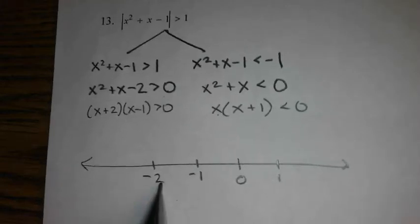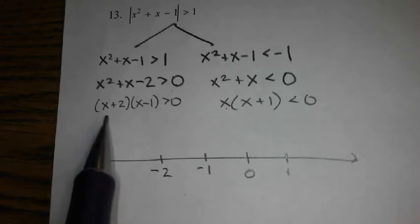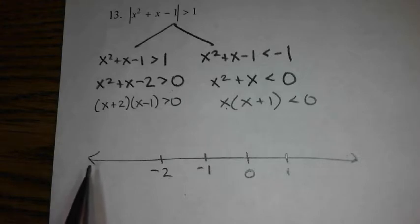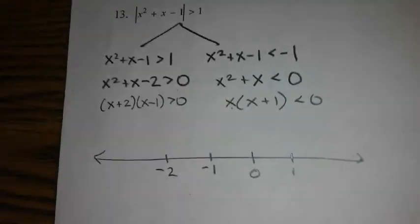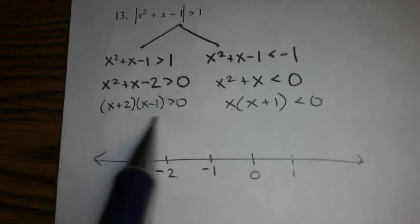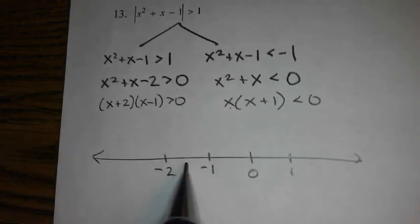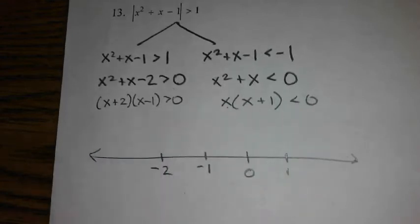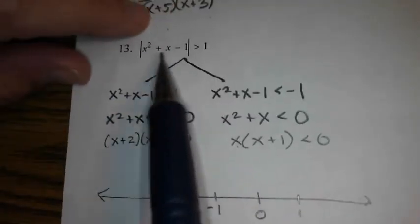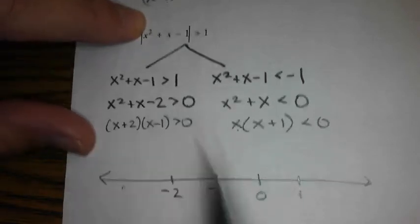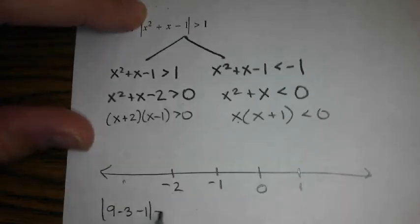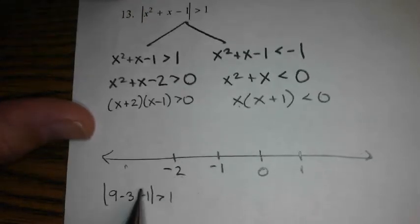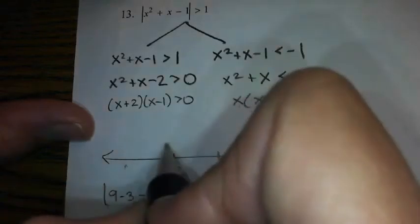So everything here is greater than, so everything is an open circle. And then we start testing. I'm going to test all of this back in the original. Because if I'm testing around negative 2 to the left, I'm definitely going to test in this inequality. But if I'm testing in here, the negative 2 came from this guy but the negative 1 came from that guy. So which one do I test for? So we'll talk about that later. But for now, let's go back to the original. What is negative 3 squared? 9 minus 3 minus 1. Is that true or false? 6 minus 1 is 5. Is the absolute value of 5 greater than 1? We want it, so that's going to be shaded in.